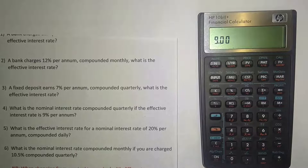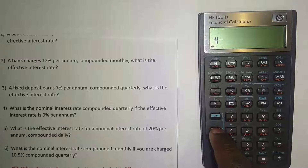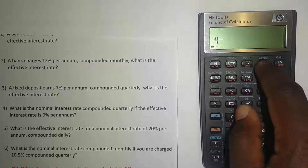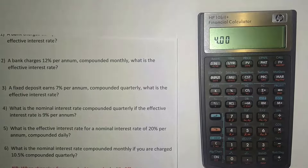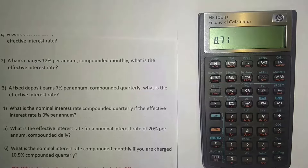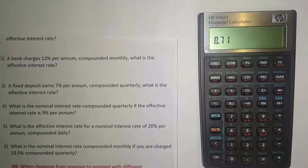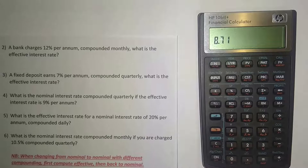Press 9, orange button, then PV where it says 'EFF' underneath to enter the effective interest rate. Then put in the number of compoundings per year — it's quarterly so press 4, orange button, then PMT for payments per year. Then press the orange button and I/YR for nominal interest rate. The nominal interest rate is 8.71%. As mentioned, effective is always higher than nominal — our effective was 9% and our nominal is 8.71%.